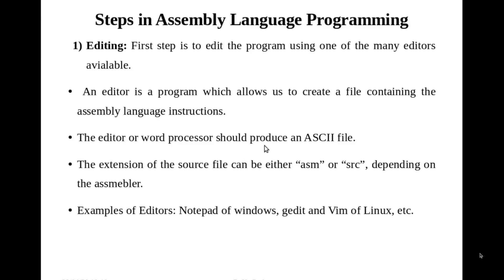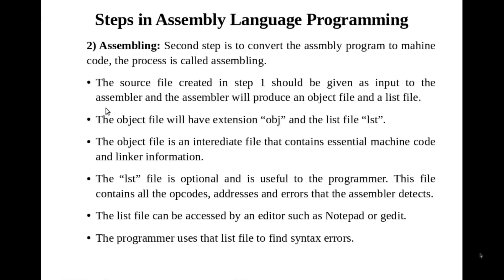The second step is assembling — converting the assembly language program to machine code. The source file created in step 1 is given as input to the assembler, which produces an object file and a list file. The object file has extension .obj and the list file has extension .lst. The object file is an intermediate file that contains essential machine code and linker information — it is not the complete machine code, but it contains what is needed to generate the final machine codes, and also linker information to link to other object files such as built-in functions.